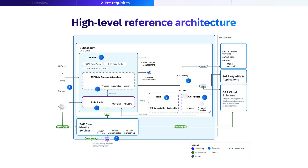The skills can leverage SAP Build Apps and SAP Build Code for custom development, while SAP Build Work Zone provides the user interface layer where skills can be surfaced to end-users. For skills deployment and lifecycle management, the architecture utilizes Cloud Transport Management for promoting skills across environments and the Accelerator Hub for accessing pre-built skill templates and best practices. Joule skills can connect to multiple backend systems through secure HTTPS connections, including SAP on-premise solutions like S/4HANA and ECC via Cloud Connector.